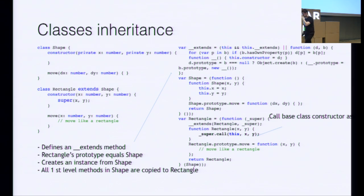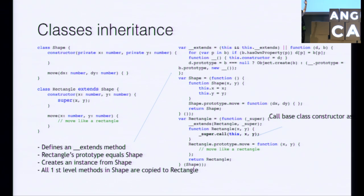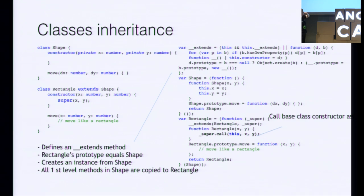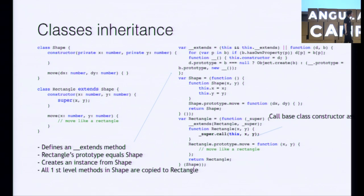Inheritance. Here we have a class shape and a rectangle that extends shape. A lot of you may have moved away from inheritance, but if you want classic inheritance you can use it — it works as expected. You have the extends keyword, and the first thing that happens in a subclass is a call to the base class constructor. Protected, private, and so on work as expected. On the right, you can see the generated ES5 declares an extends method, sets rectangle's prototype to shape, creates an instance from shape, and copies all first-level shape methods to rectangle.